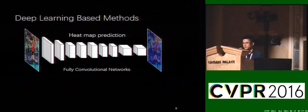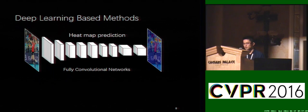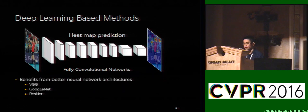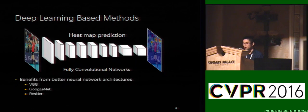Recently, the state-of-the-art performance on pose estimation is based on deep neural networks. These kinds of methods predict heat maps for each body part by fully convolutional networks, and these approaches benefit from better feature representations, and they facilitate the use of deeper networks such as VGG, GoogleNet, or ResNet.